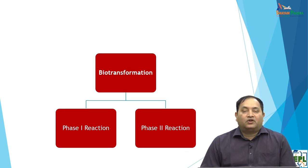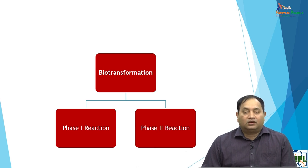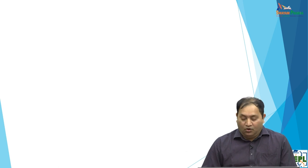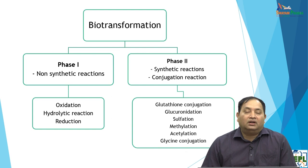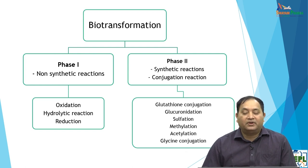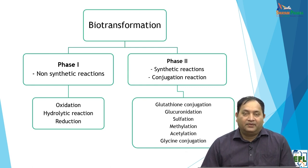The whole process of biotransformation or drug metabolism comprises two things: Phase 1 and Phase 2 reactions. In Phase 1, the drug becomes pharmacologically inactive — this is called a non-synthetic reaction, in which the drug undergoes oxidation, hydrolytic reactions, or reduction. Phase 2 is a synthetic reaction where conjugation occurs, such as glutathione conjugation, glucuronidation, sulfation, methylation, acetylation, or glycine conjugation. In Phase 1 the drug becomes pharmacologically inactive, and in Phase 2 there is a synthetic or conjugation reaction.